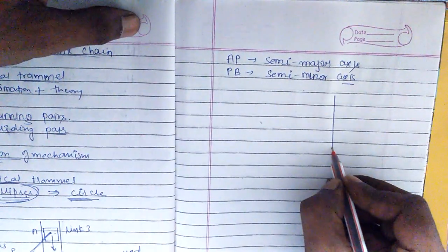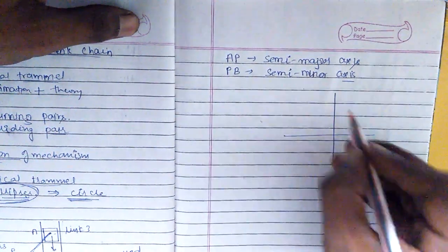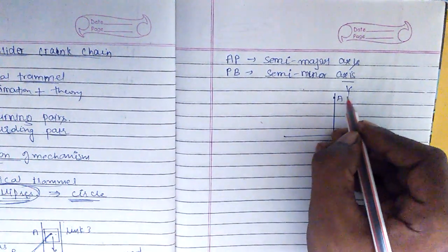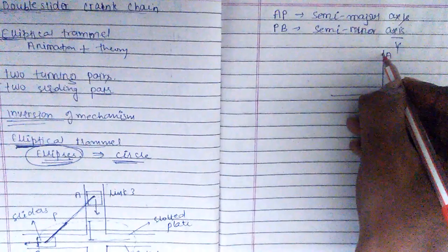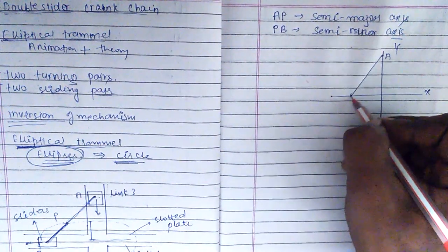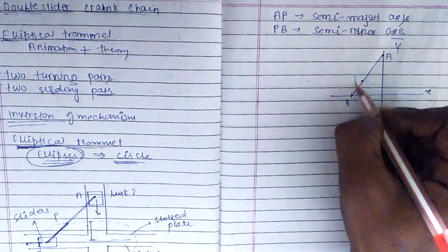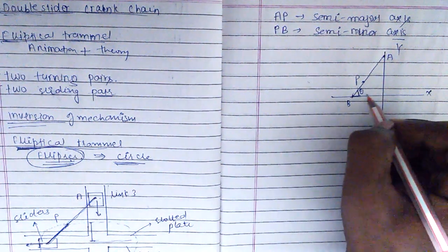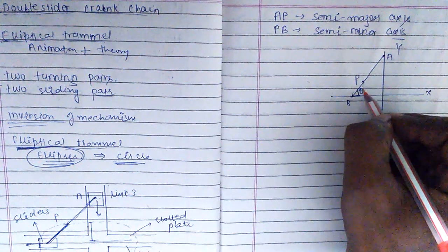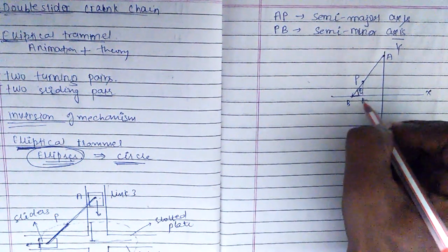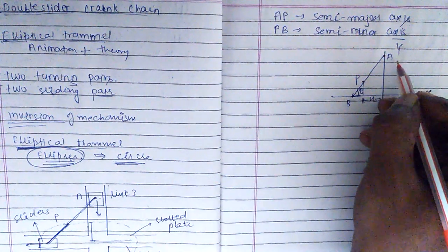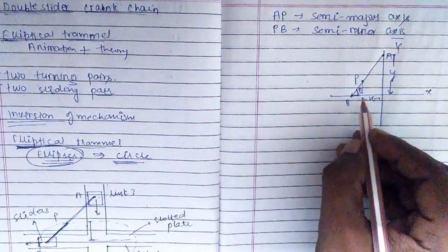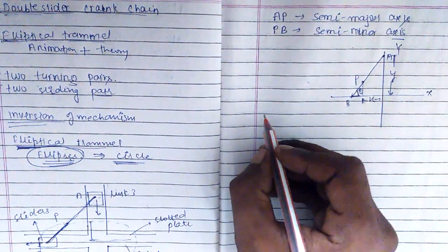Now let us draw another diagram — a free body diagram. This is the x-axis and this is the y-axis. Suppose point A is on the x-axis, point B is on the y-axis, and P is some point in between. It forms some angle theta with the x-axis. Extending the line, we get coordinates x and y, where y is the height.